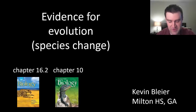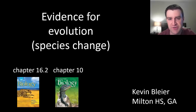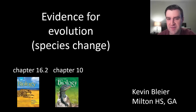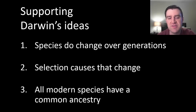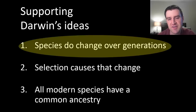Welcome to the first in a series of videos trying to show some evidence for evolutionary theory. We're ultimately going to try and support all three of these ideas, but in this particular video we're just going to discuss the first: the idea that species actually do change over generations.